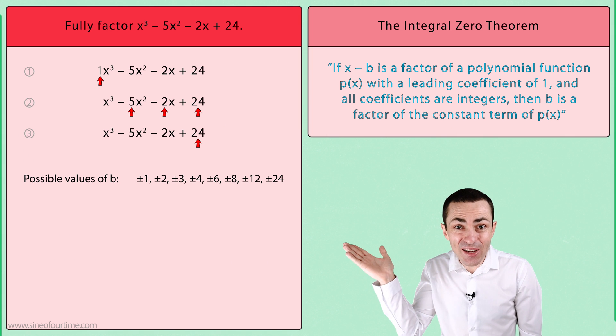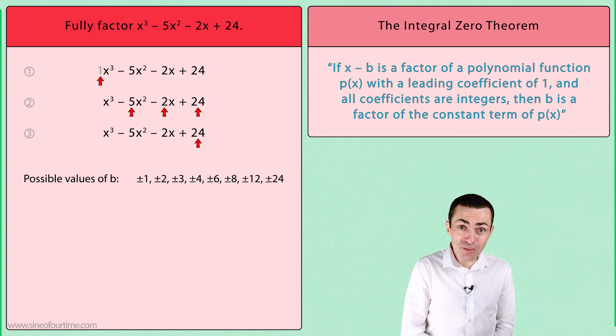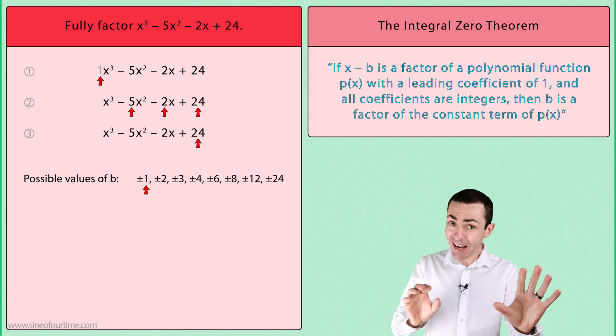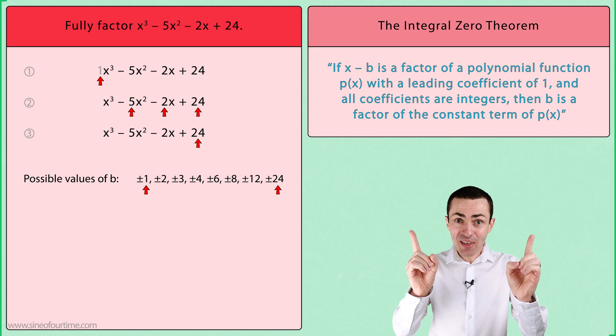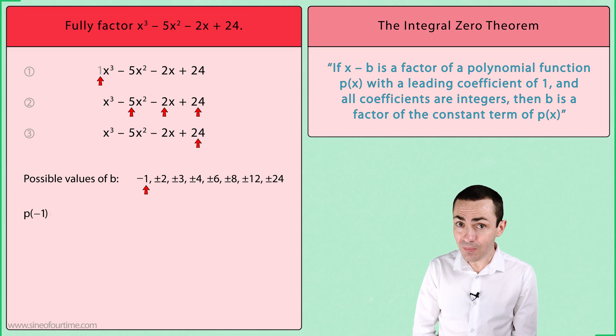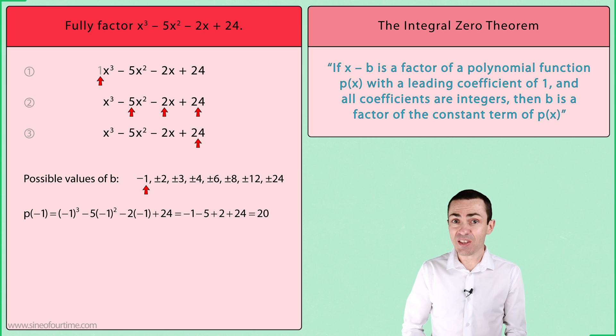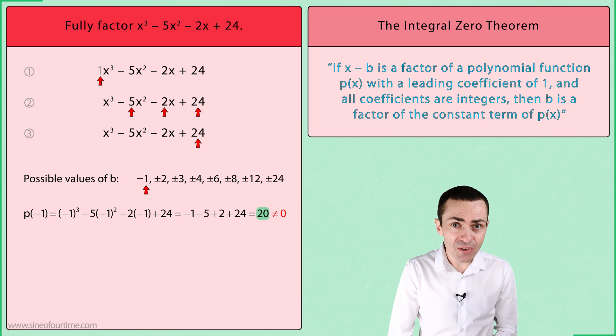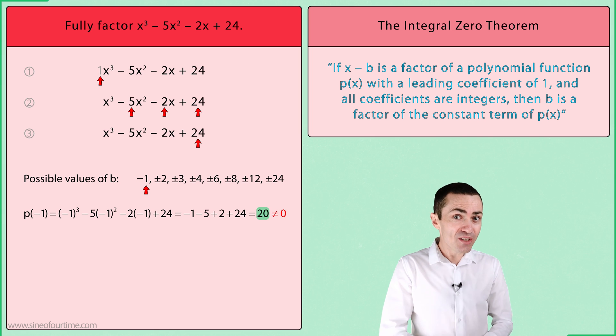There are a lot of values listed here, so my advice is always to start testing from the lowest number to the highest number. With that in mind, let's start by testing -1 by using the factor theorem, where we could see the answer is 20. And since this value is not equal to 0, we can conclude that b cannot be equal to -1.